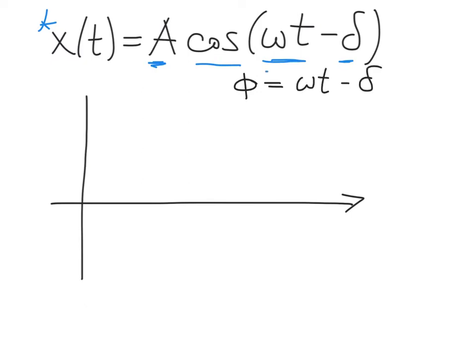Let's make a plot of what φ does as a function of time. At t=0, the ωt term is zero, so φ = −δ. As time marches on, φ increases linearly, passing through zero at some later time. If we then plot cos(ωt − δ), initially at t=0 that cosine value is x₀—our assumed initial condition. But x₀ doesn't necessarily represent the maximum amplitude for the oscillator.